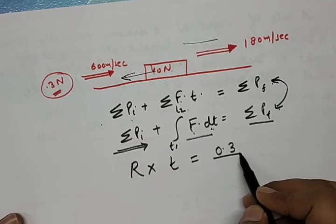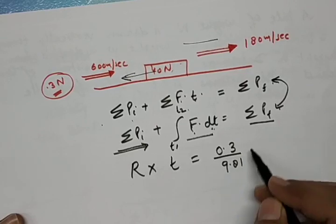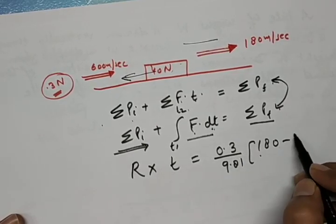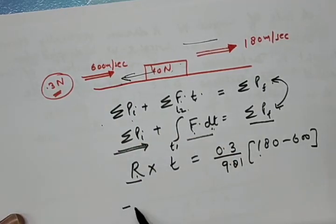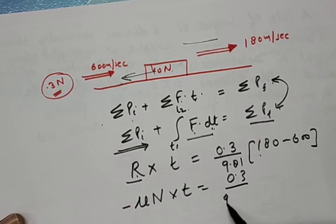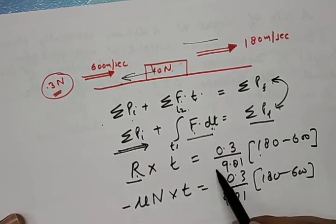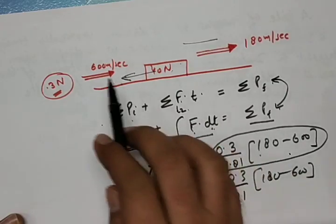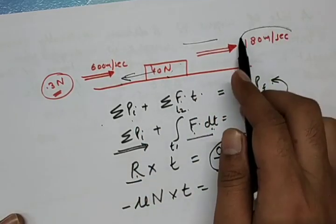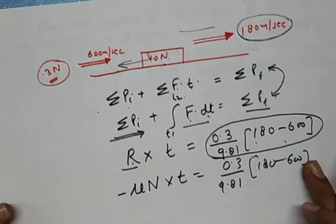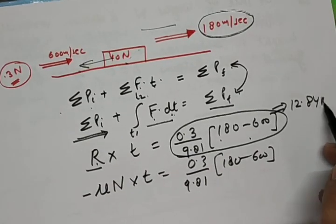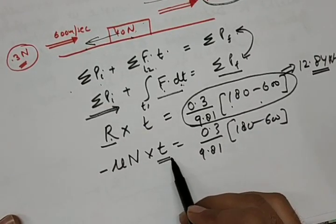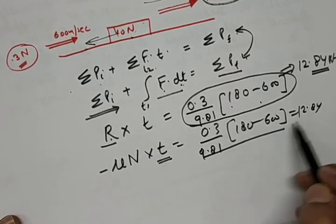Applying the equation for the bullet: mu times N times t equals (0.3 / 9.81) times (180 minus 600). The frictional force acts in the negative x-direction. This gives the impulse that the bullet provides to the block. Calculating this value, the impulse comes out to be 12.84 Newton-seconds.